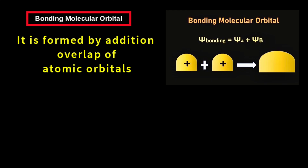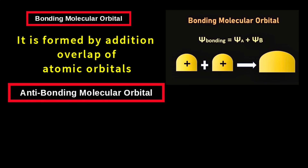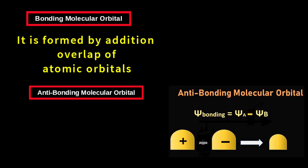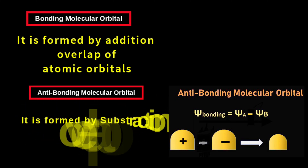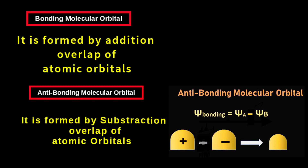Generally, bonding molecular orbitals are formed by the addition overlap of atomic orbitals, while the anti-bonding molecular orbitals are formed by the subtraction overlap of atomic orbitals, as shown here.